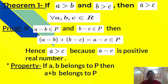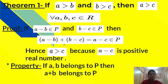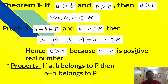Theorem 1: If a greater than b and b greater than c, then a greater than c, for every a, b, c belonging to R. Proof: Since a is greater than b, a minus b belongs to P. Since b is greater than c, b minus c belongs to P. Adding these two: (a minus b) plus (b minus c) equals a minus c, which belongs to P. Therefore a greater than c, using the property that if a, b belong to P then a plus b belongs to P.